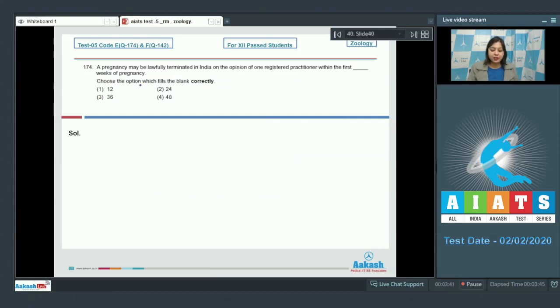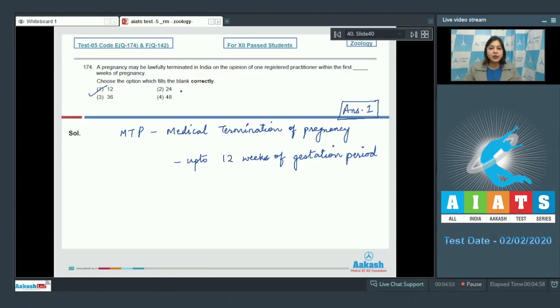Question number 174. A pregnancy may be lawfully terminated in India on the opinion of one registered practitioner within the first dash weeks of pregnancy. Choose the option which fills the blank correctly. Number 1, 12. Number 2, 24. Number 3, 36 and number 4, 48. Lawful termination of pregnancy is called MTP that is medical termination of pregnancy. And it is safe up to 12 weeks of gestation period. So the correct answer becomes option number 1 that is 12 weeks. Moving on to the next question students.